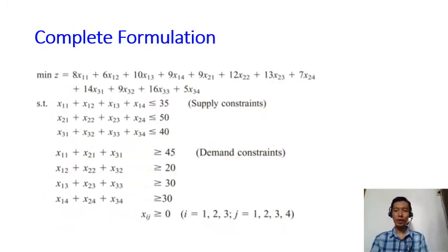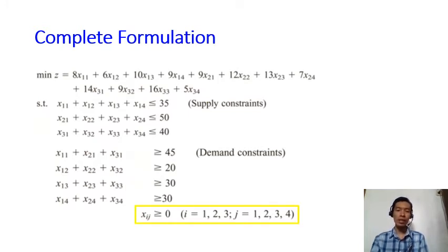Here is the complete formulation. We have seven constraints in total — three from the supply side and four from the demand side. As usual, do not forget to state the sign restrictions: all variables must be greater than or equal to zero.